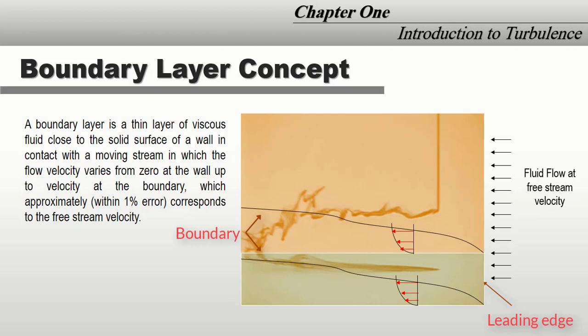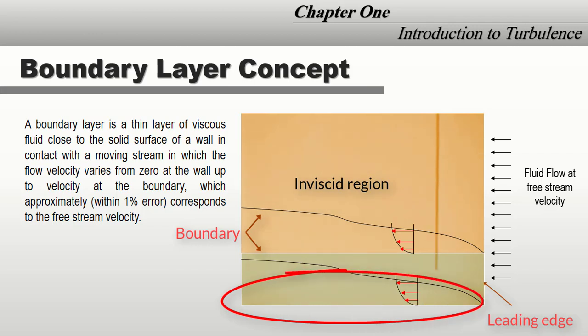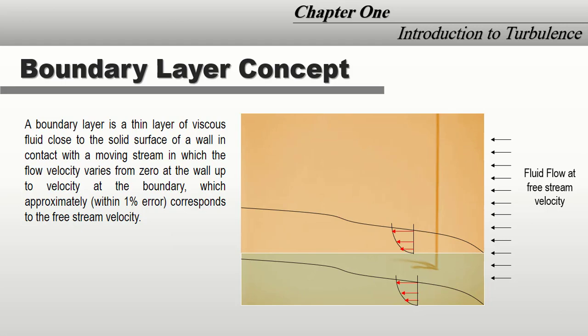This boundary divides the flow into two unequal regions. In the bulk fluid region, the viscosity effect can be neglected—this is called inviscid flow. The second region is a very thin boundary layer near the wall where viscosity must be taken into account.